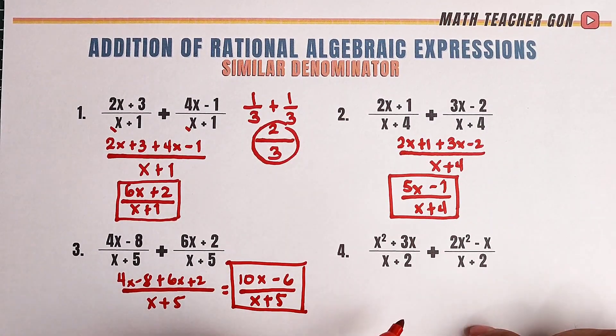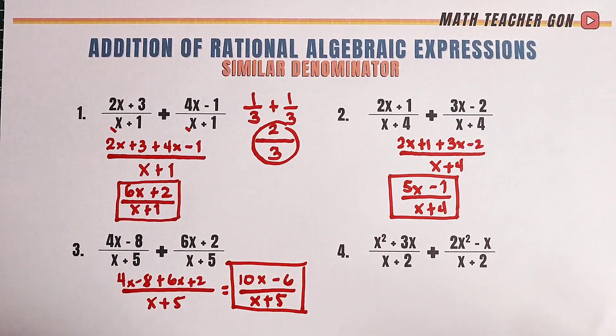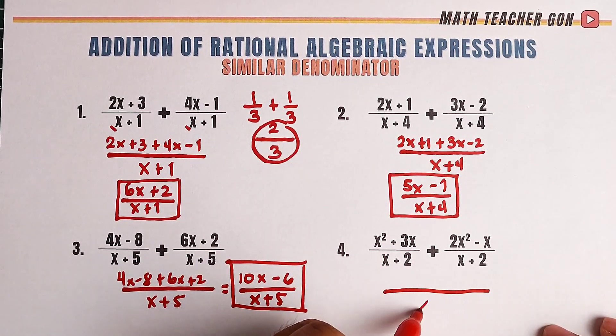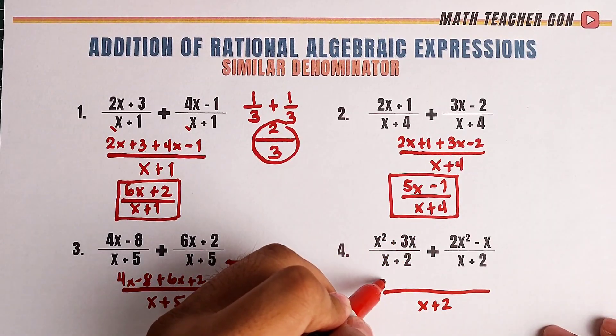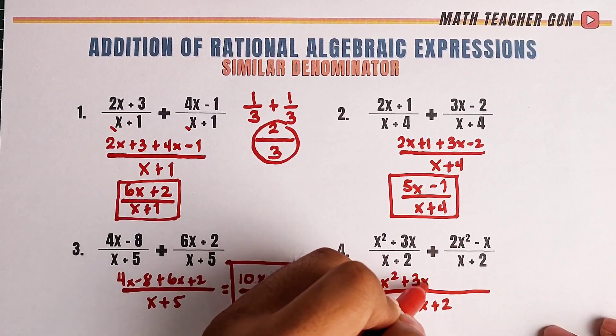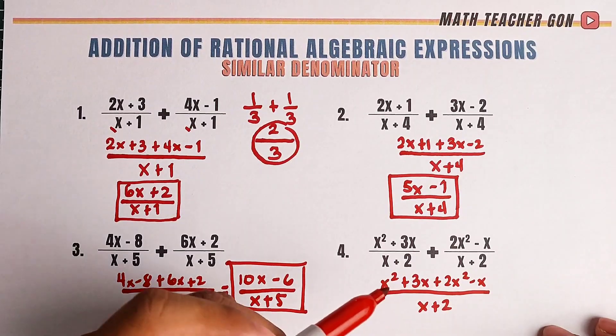Now guys, what about number 4? We have an exponent here. Don't worry, same process. Copy the common denominator, which is x plus 2. Copy this one, we have x squared plus 3x plus 2x squared minus x.